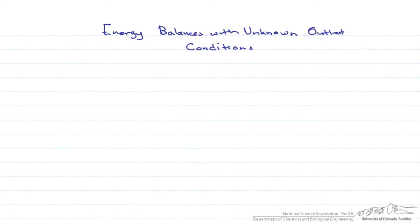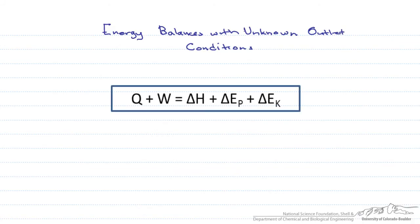Many energy balances involving reactions specify both the inlet and outlet conditions. However, there are cases when the outlet temperature isn't known. So for these problems we have to use the same energy balance such that Q equals delta H.